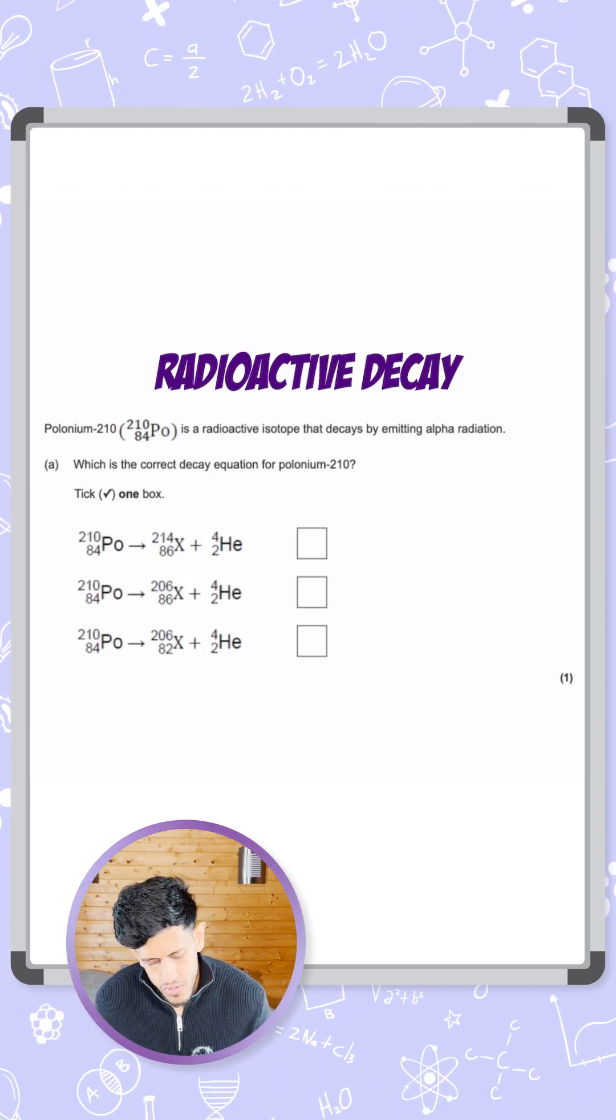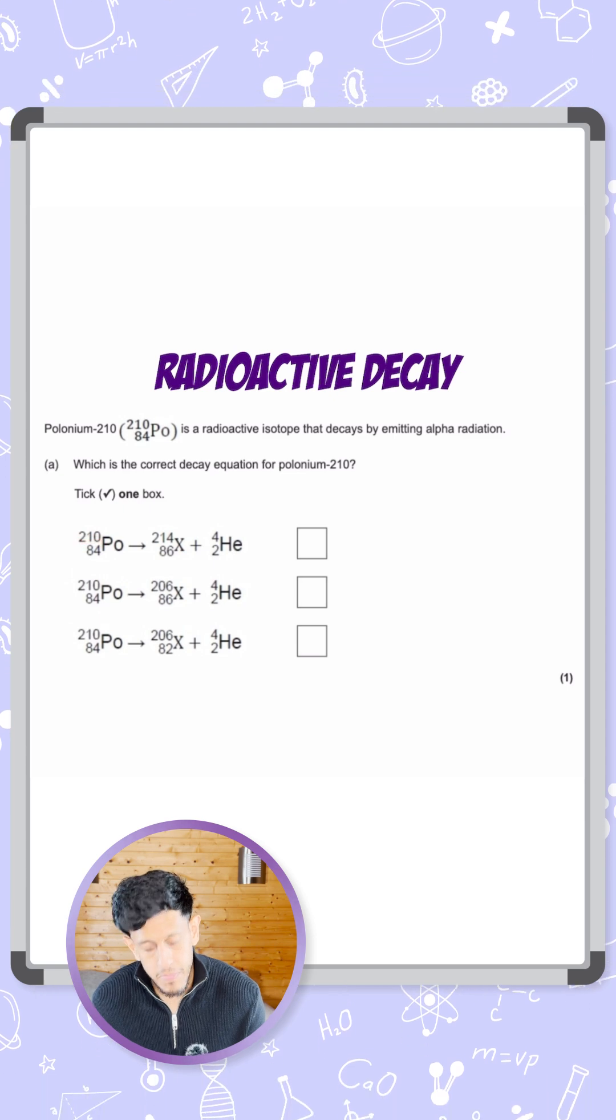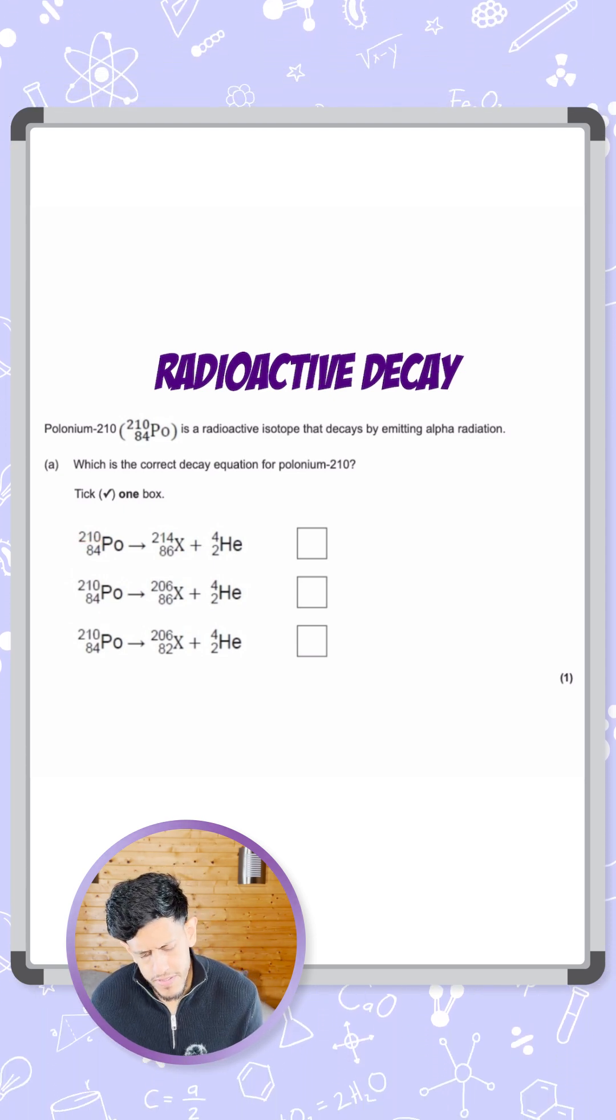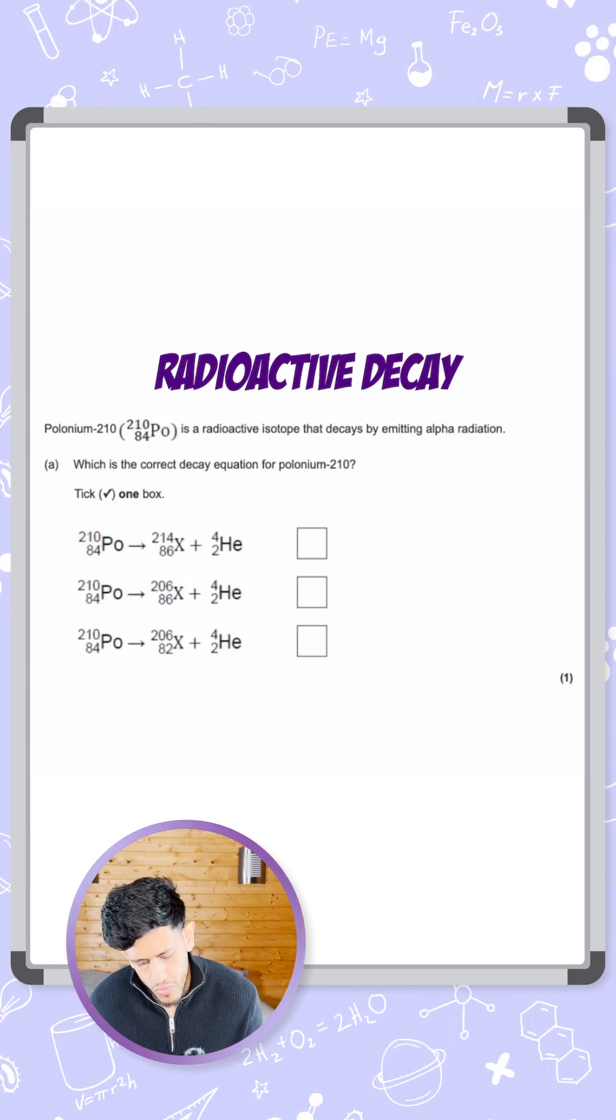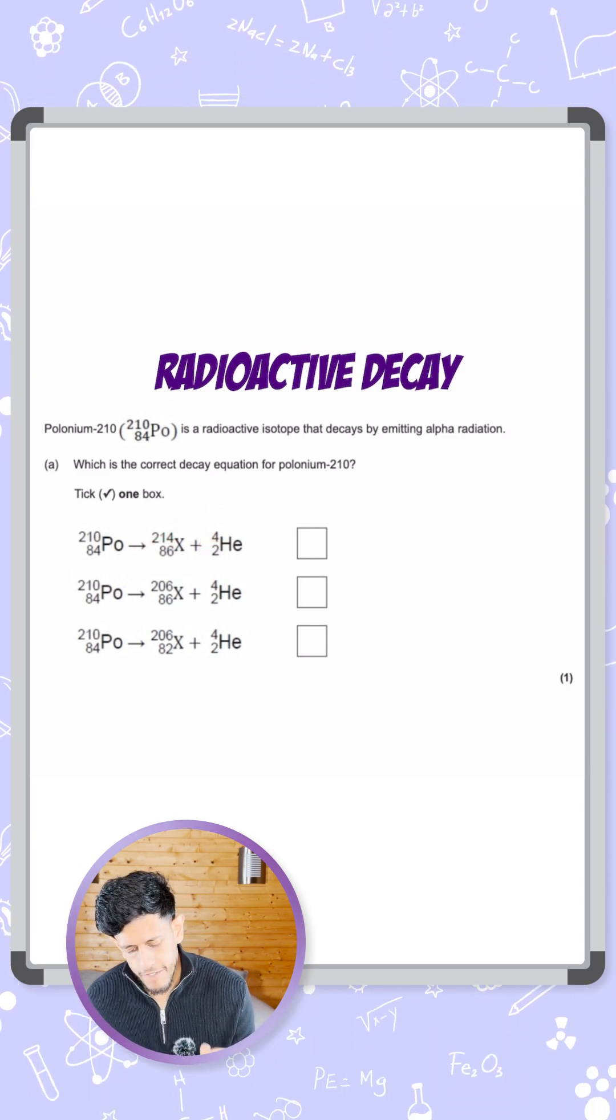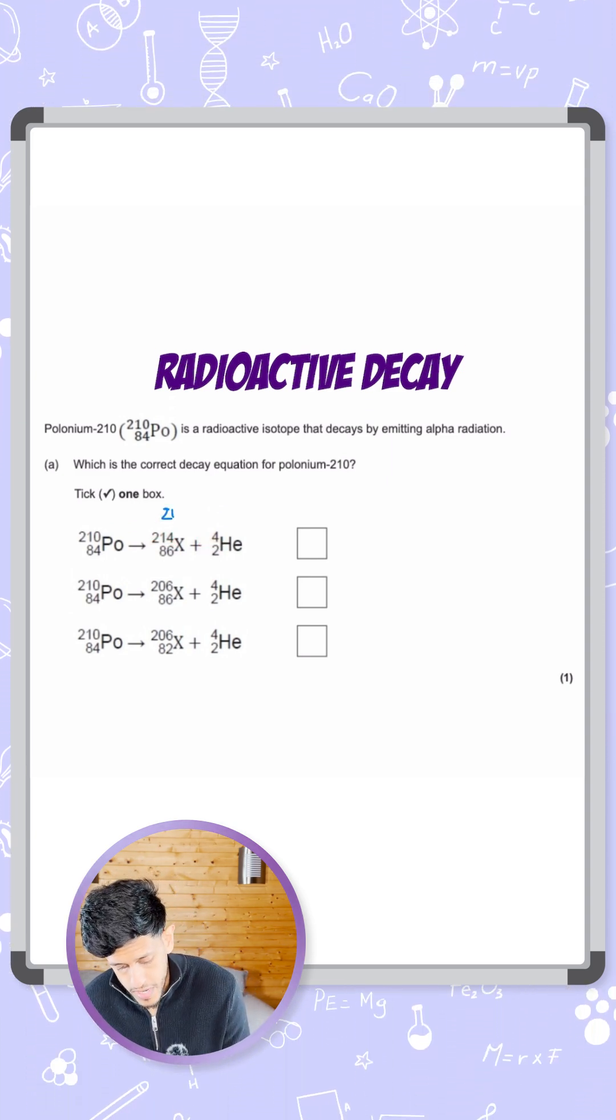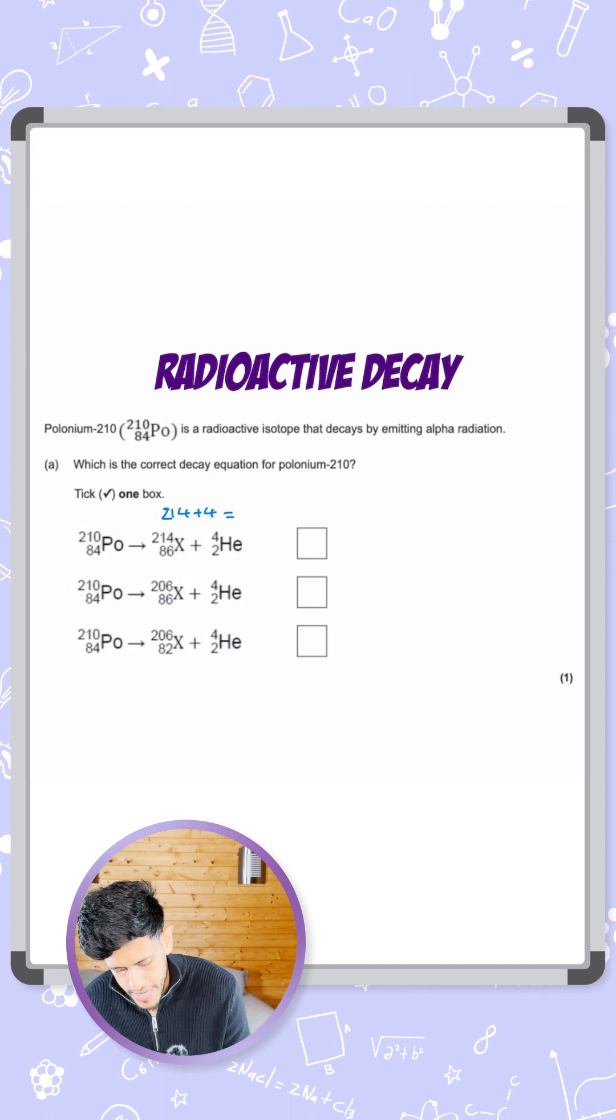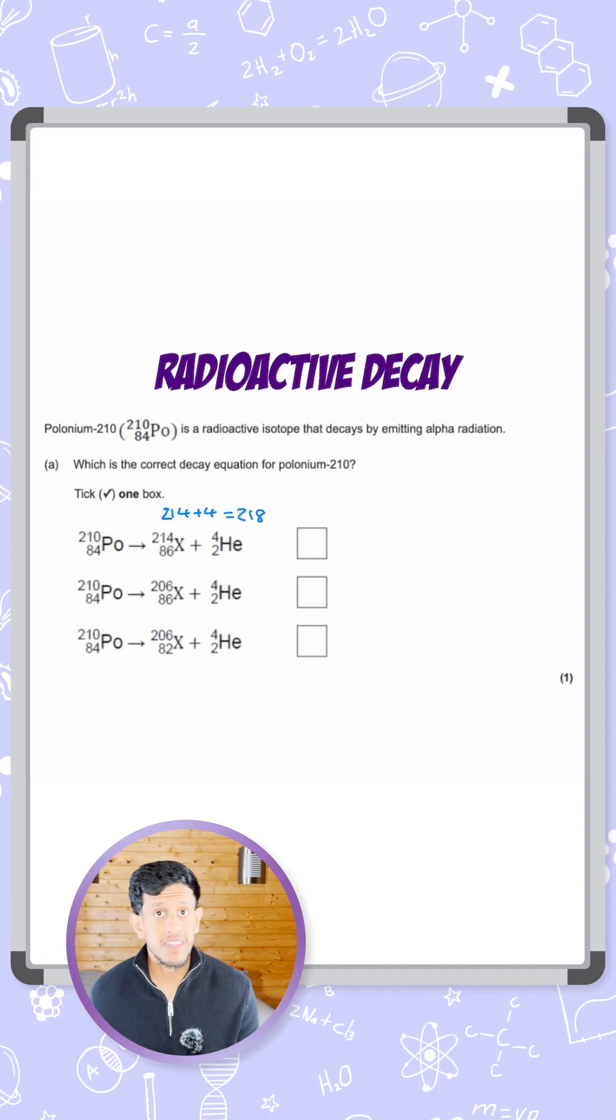So we can see there's 210 as the mass number for polonium. If we look at the first example, we've got then 214 for X and 4 for the helium. So if I added those, 214 plus 4 is 218, so that's not 210, so that's not going to work.